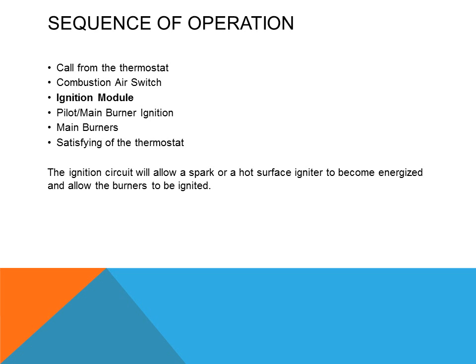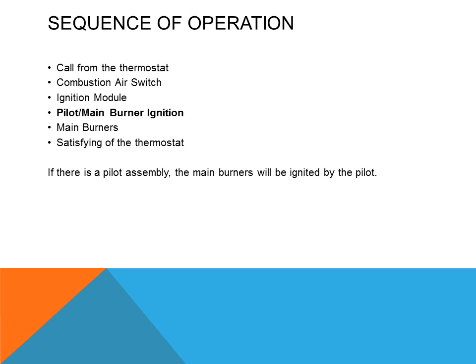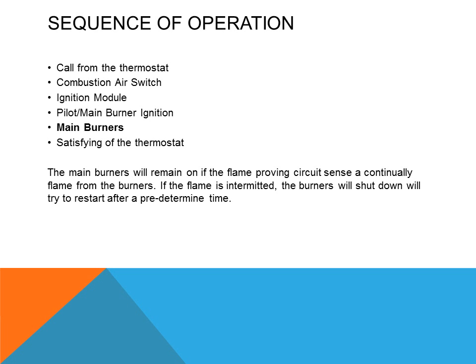The ignition circuit will allow a spark or a hot surface igniter — a component that generates very high temperature — to become energized and allow the burners to be ignited. If there is a pilot assembly, the main burners will be ignited by the pilot. The main burners will remain on if the flame proofing circuit senses a continual flame from the burners. If the flame is intermittent, the burners will shut down and will try to restart after a predetermined time.